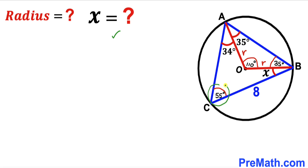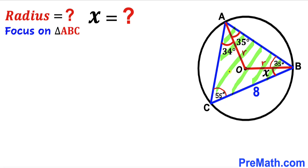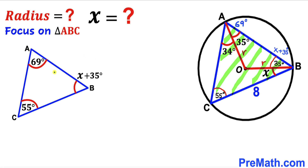So the angle at the circumference ACB turns out to be 55 degrees. Now let's focus on the blue triangle ABC. Angle ACB is 55 degrees. Angle BAC is 34 plus 35 degrees, which equals 69 degrees. And angle ABC is x plus 35 degrees. So the three interior angles of triangle ABC are 55 degrees, 69 degrees, and x plus 35 degrees.